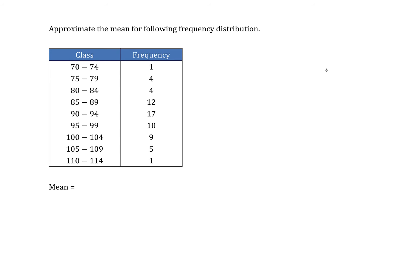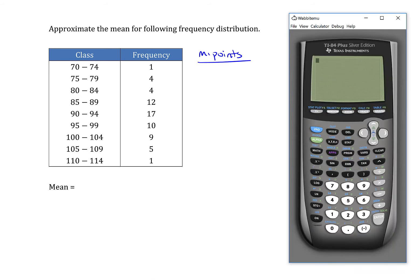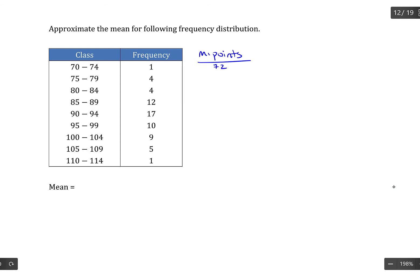And what we use is the midpoint. The midpoints, if you'll recall, are the average between the upper and lower class boundaries. So if we have 70 as our lower class bound and 74 as our upper class bound, 70 plus 74 divided by 2 averages those numbers and gives me a midpoint of 72 for the first class.